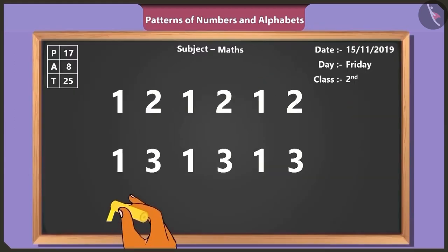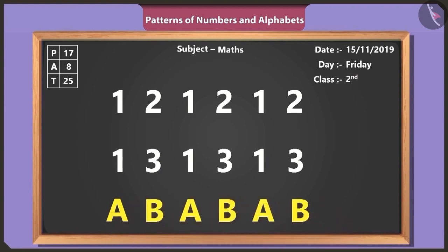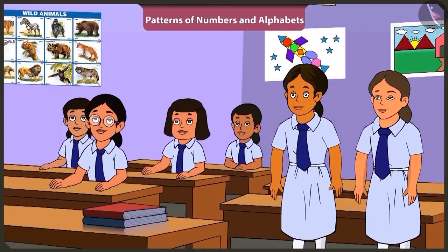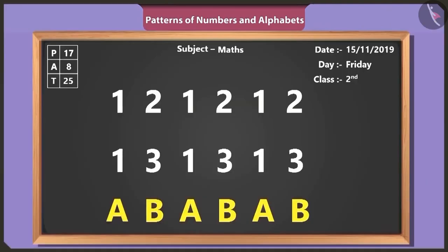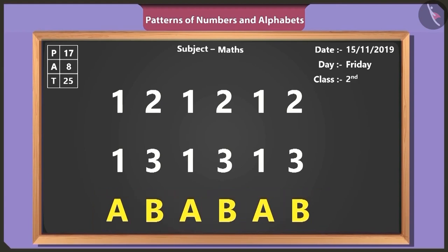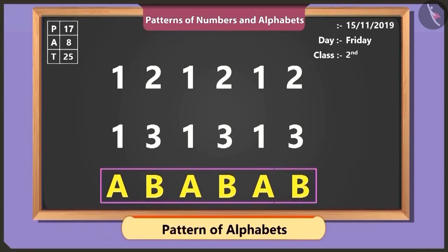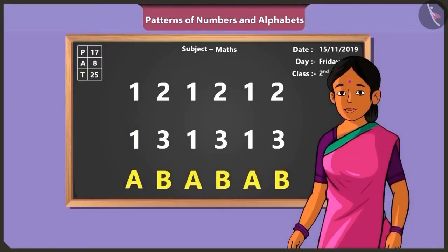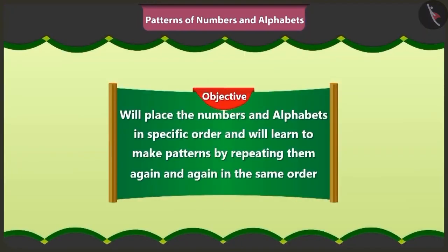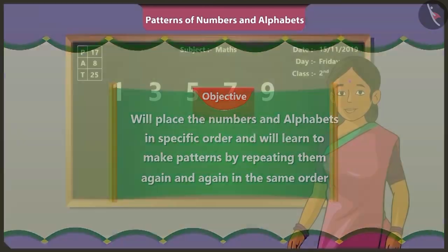Children, now look carefully at what I write on the board. You have written the English alphabets A and B and repeated them again and again. Oh yes, this is a pattern of alphabets. Well done, Binny. So friends, today in this video, we will place the numbers and alphabets in a specific order and we'll learn to make patterns by repeating them again and again in the same order.